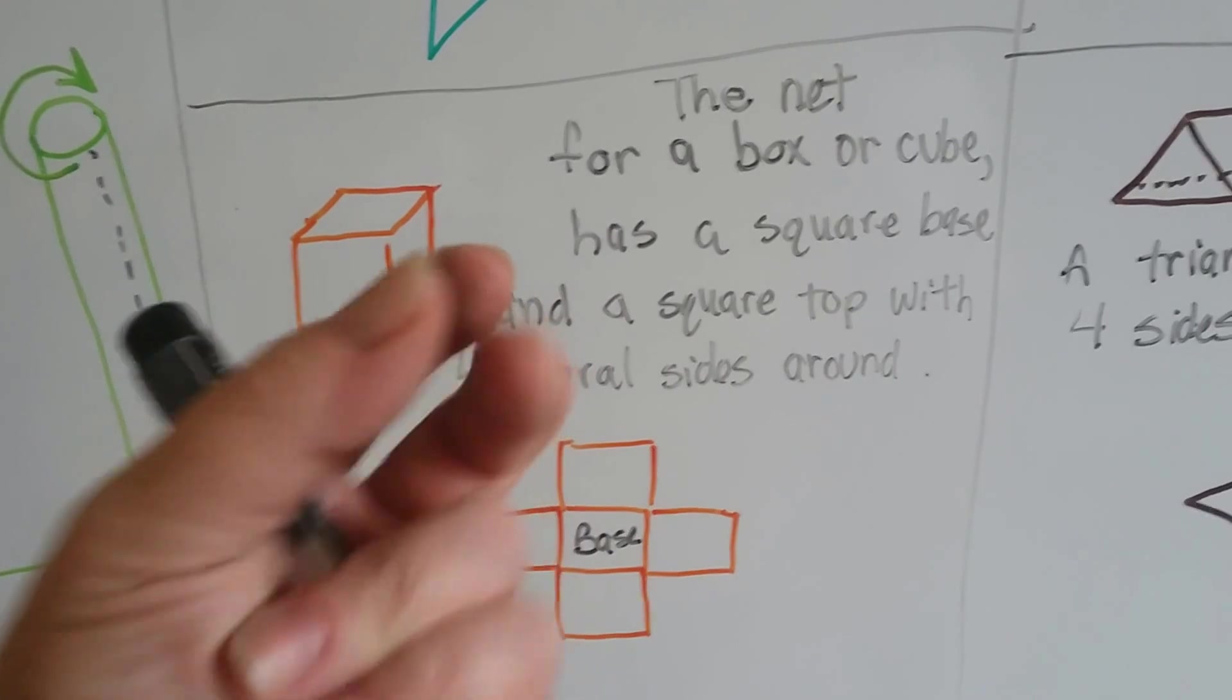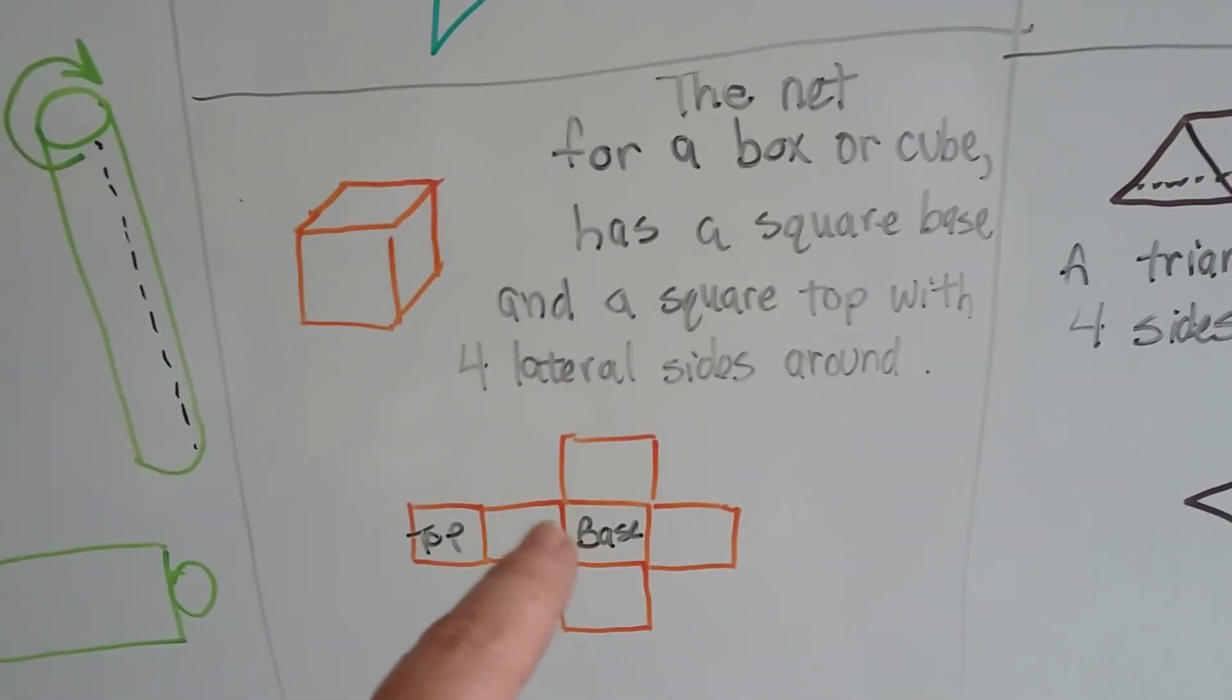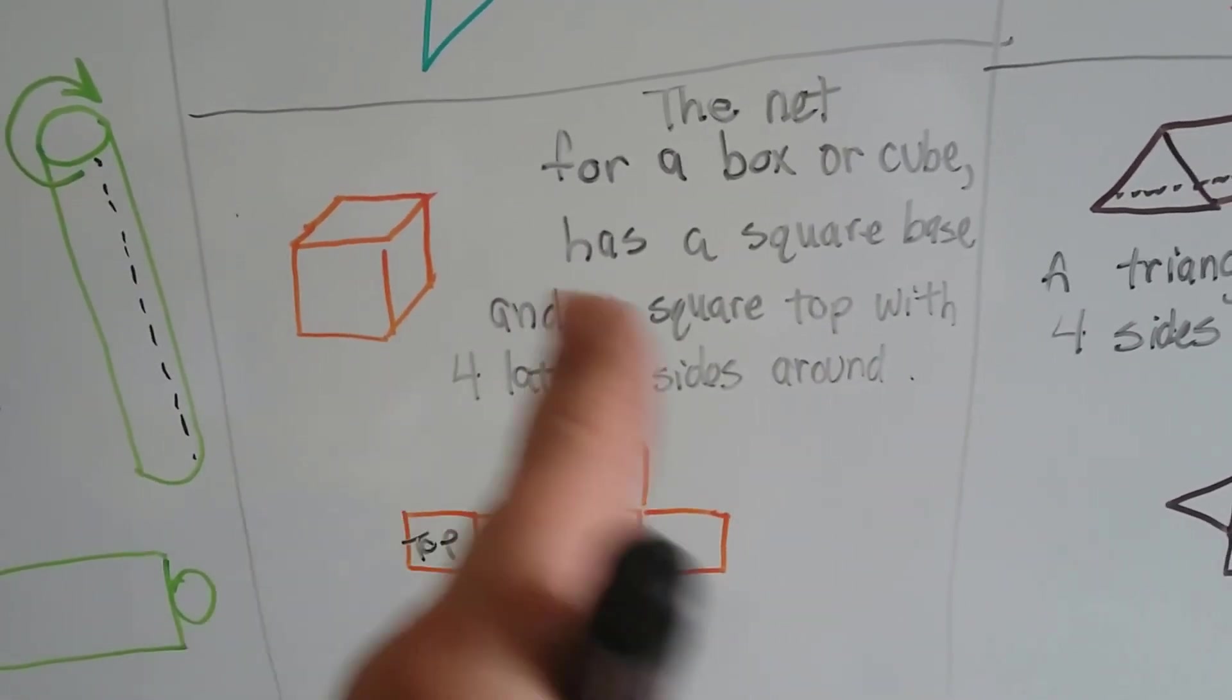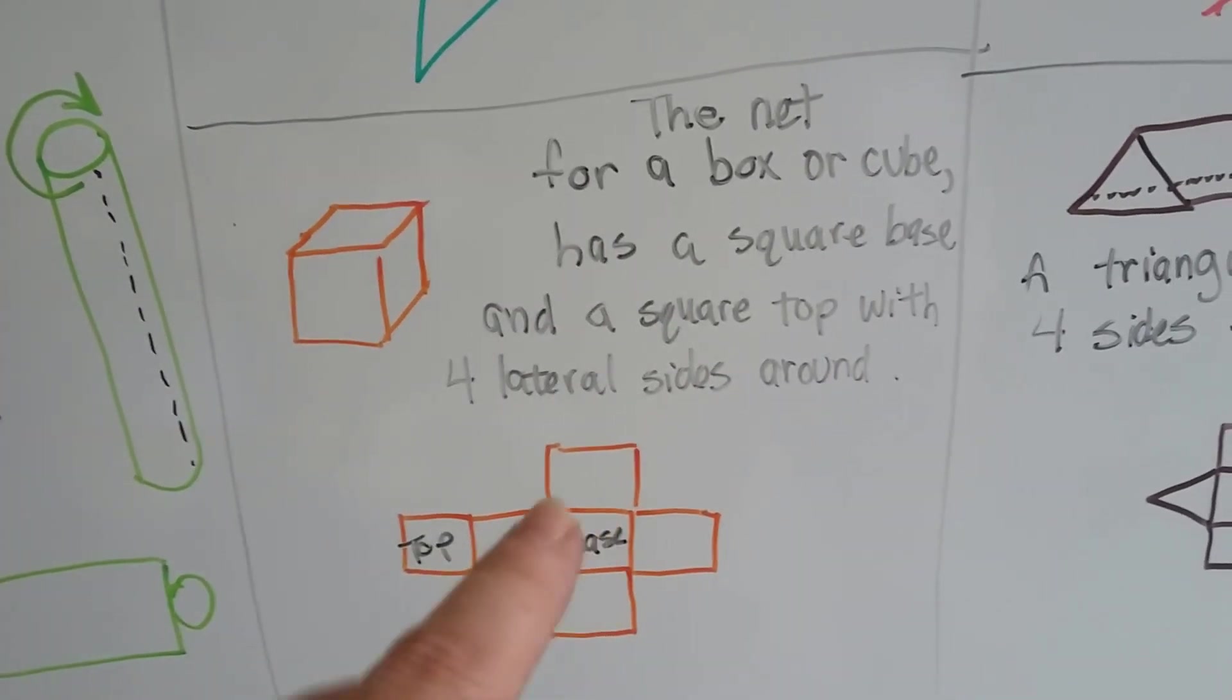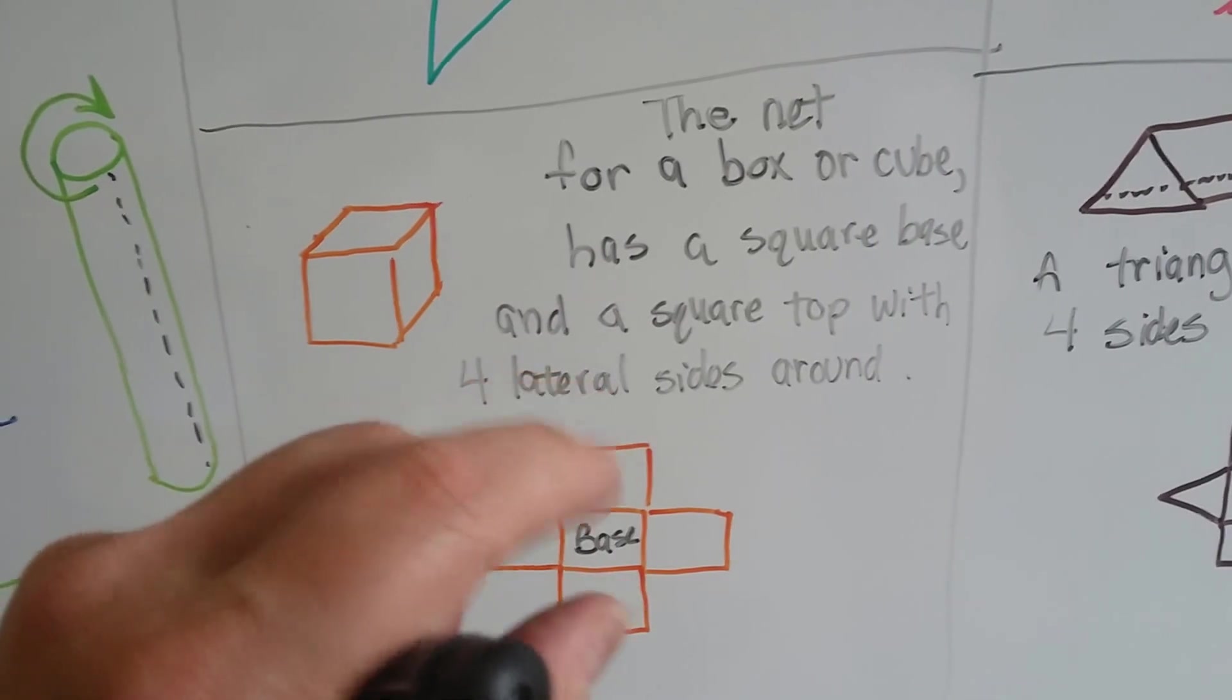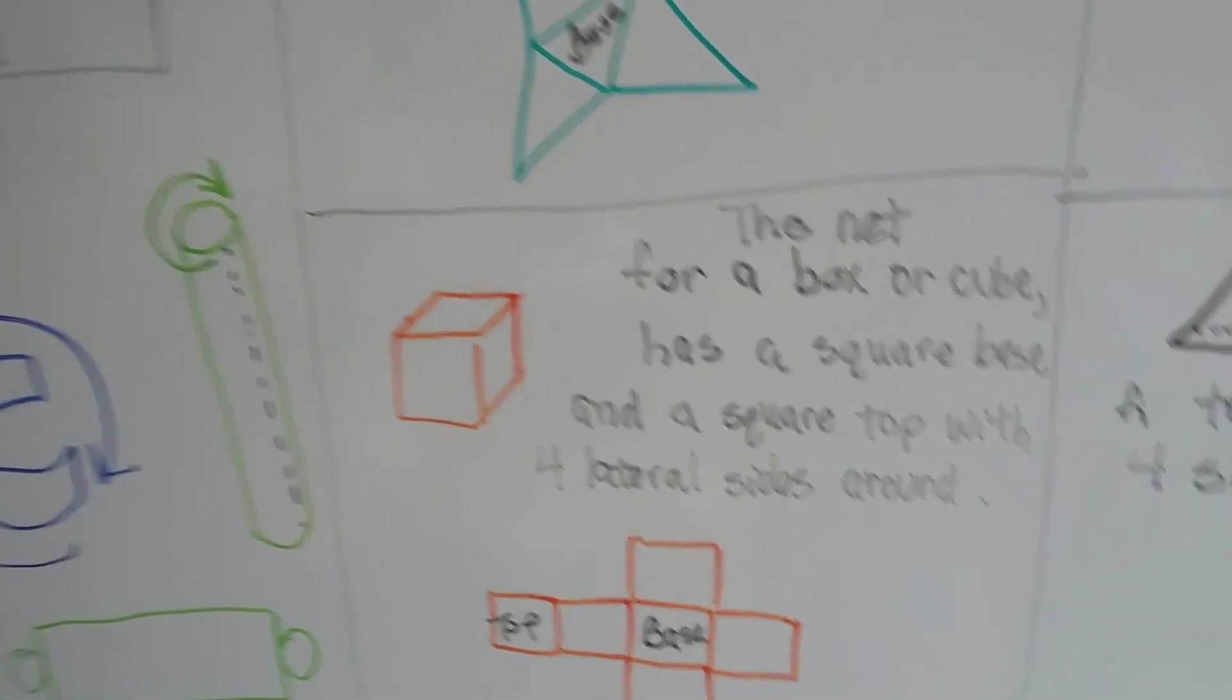And then if this is a fold line and this is a fold line, this side folds up. And this one folds on top of it as the top, base one or base two. It's got a top and a bottom.